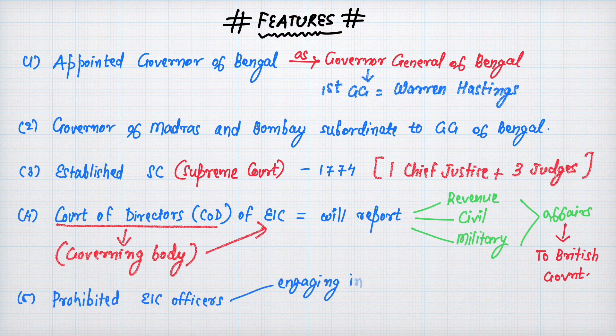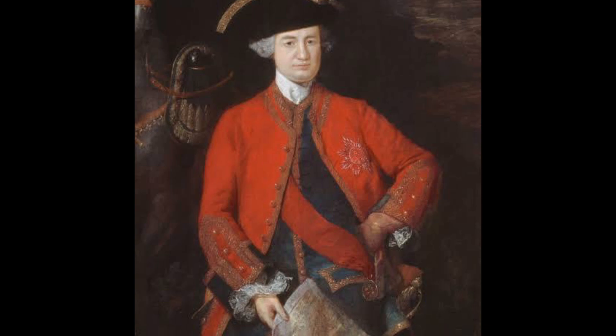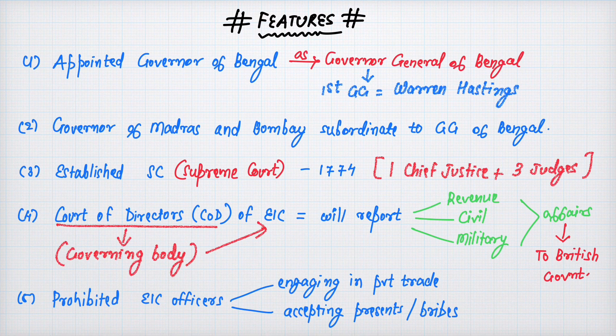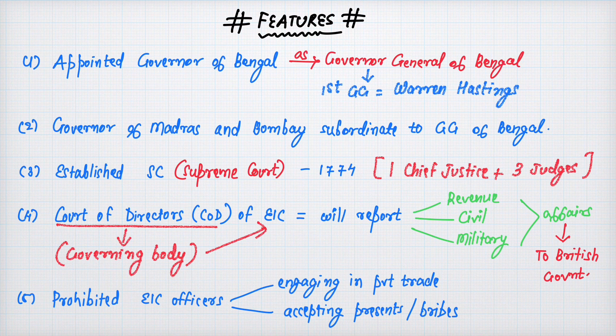Governors of Madras and Bombay became subordinate to the Governor General of Bengal. The act established a Supreme Court in 1774 with one Chief Justice and three judges. The Court of Directors of the East India Company became its governing body, reporting on revenue, civil, and military affairs to the British government. The act also prohibited EIC officers from engaging in private trade and accepting bribes.